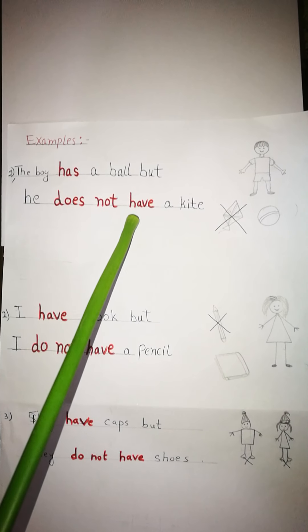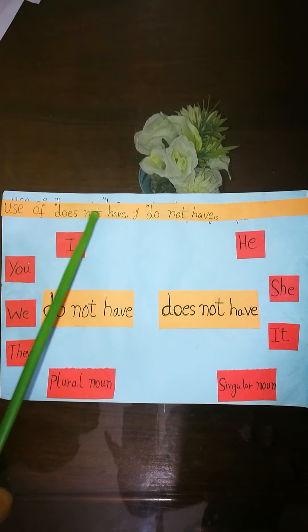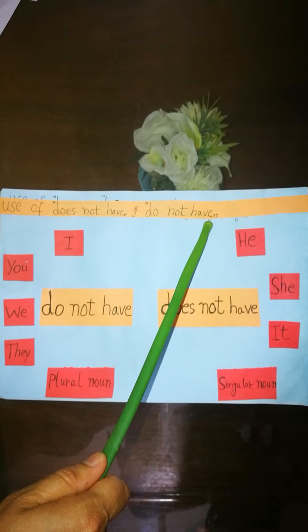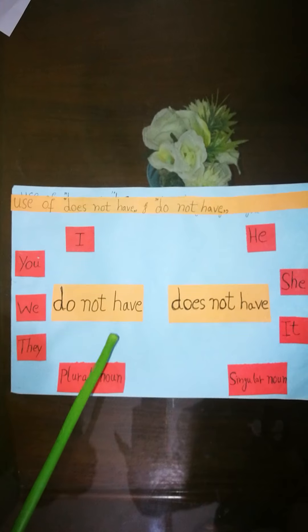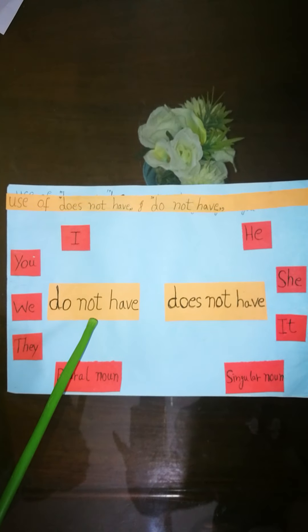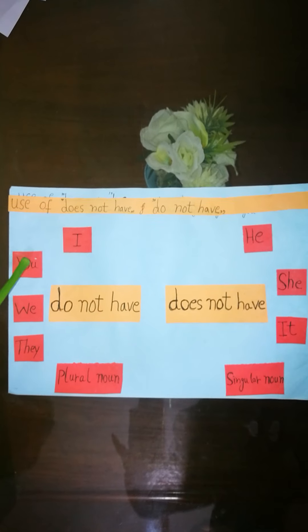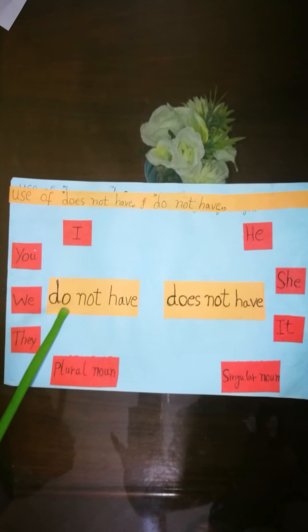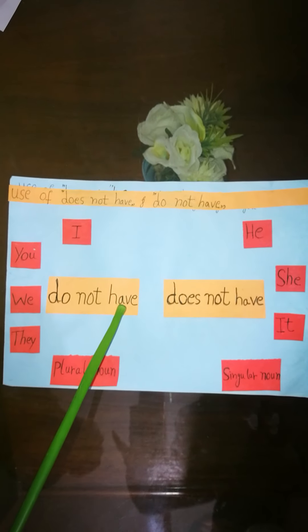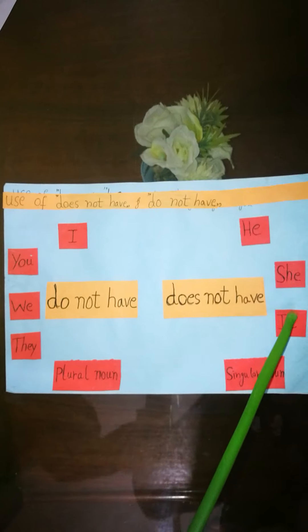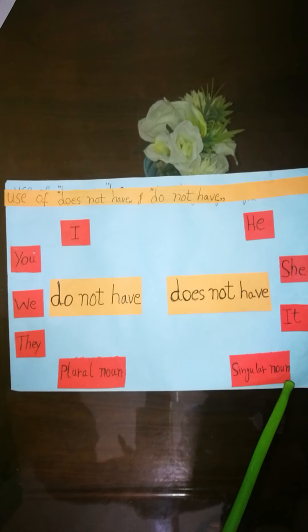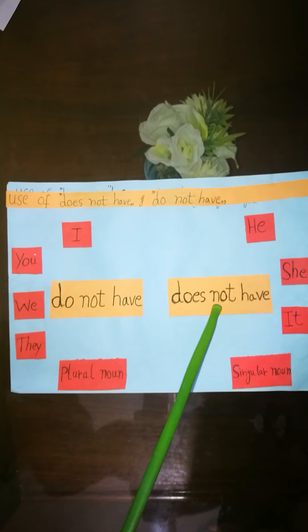Now this is a chart for you — the use of 'does not have' and 'do not have'. With this chart you will learn where to use 'do not have' and where to use 'does not have'. It's simple: with the pronouns I, you, we, they, and plural nouns, we use 'do not have'. With he, she, it, and singular nouns, we use 'does not have'.